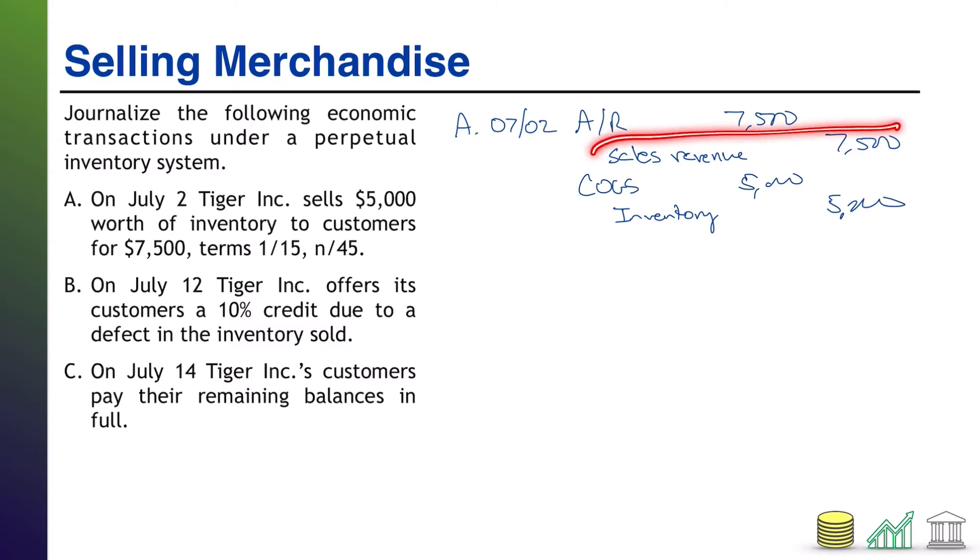Notice the combination of recording revenue of what we charge the customer and cost of goods sold for what we originally paid for the inventory, that combination creates the profit of the company. In this case, a $2,500 markup. That's A. Now, let's check B.